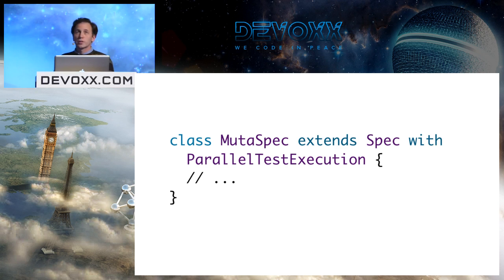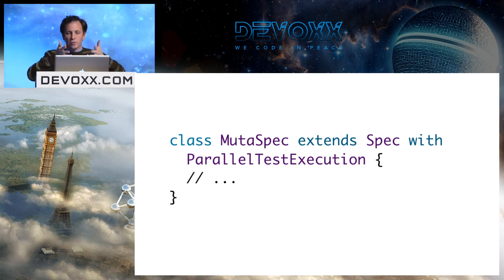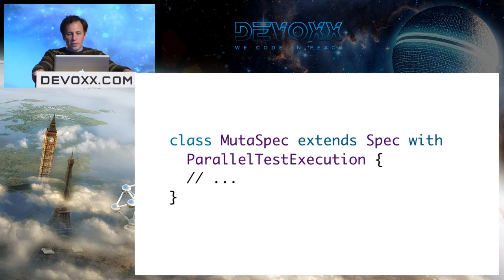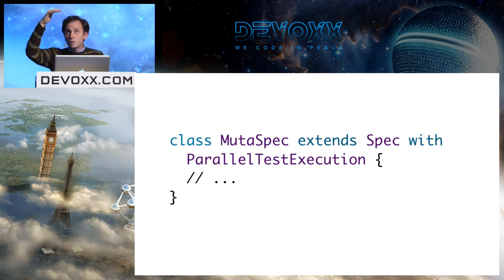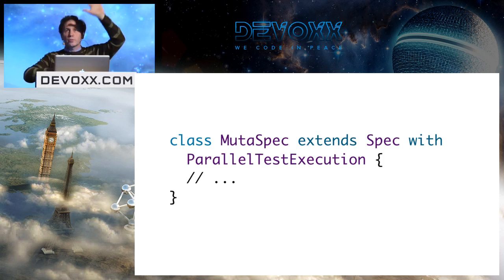Only if you mix in the `ParallelTestExecution` trait do tests run in parallel within a class. Even though I recommend writing tests in a functional style without shared mutable state, people will use shared state anyway. So I had `ParallelTestExecution` extend `OneInstancePerTest`, meaning each test gets its own instance. Even if you write tests with shared mutable state, they won't interfere with each other when running in parallel because each is in its own instance. It's not impossible to screw up, but I tried to make it hard.